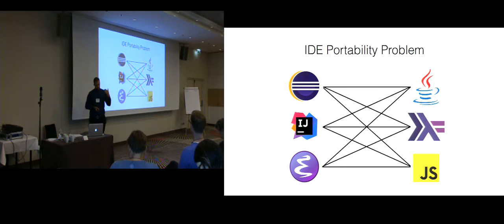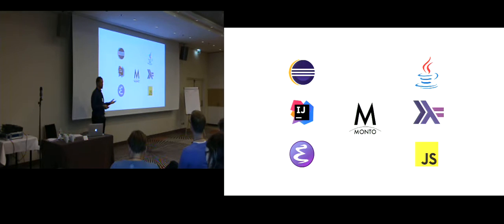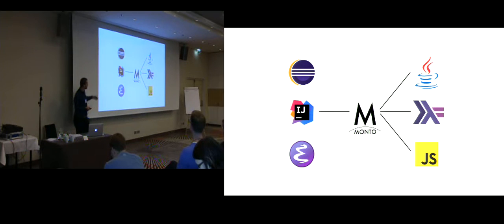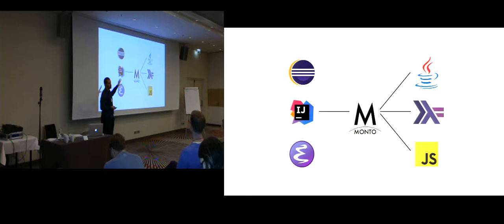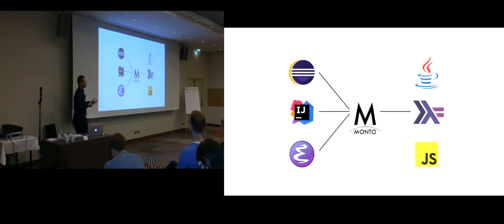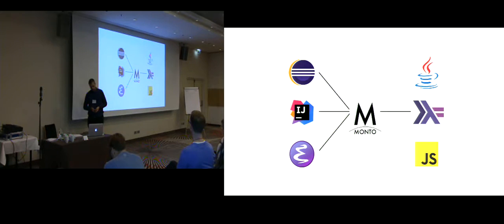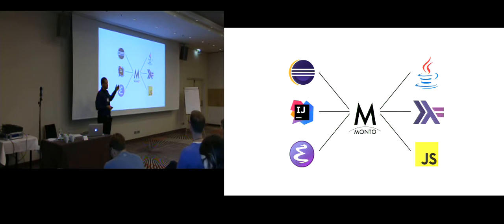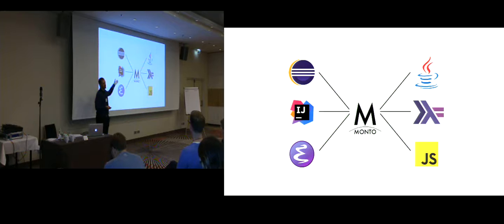We propose a solution to this problem, namely Monto. With Monto, the situation looks like this: we only need to implement one single IDE plugin to give support for all languages, and each language only needs to implement what we call one language service to cater to all IDEs. Overall, the number of required implementations is now six — three IDE plugins and three language services — so we have reduced a lot of redundant effort.